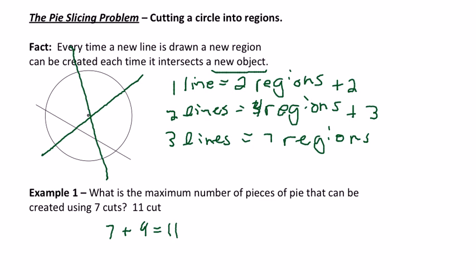And then the fifth cut is going to get us five more, which is going to be sixteen regions. So for five cuts, we're going to have sixteen regions. For six cuts, we can get twenty-two regions. And finally, for seven cuts, twenty-two plus seven is twenty-nine regions. So for seven cuts, the maximum number of pieces is twenty-nine.